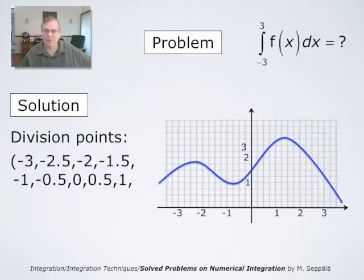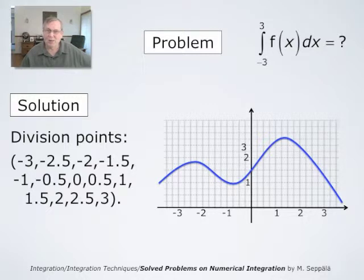So division points are negative 3, negative 2.5, negative 2, negative 1.5, and so forth. The length of each subinterval is 1 half, because we decompose the interval from negative 3 to 3, which is of length 6, into 12 subintervals.